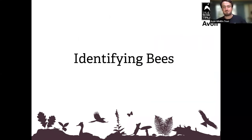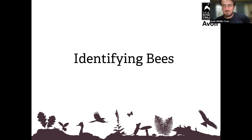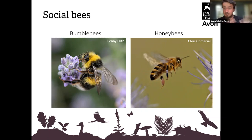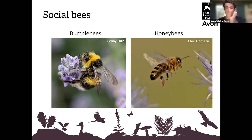Now let's crack on with identifying bees. As I said earlier, we divide bees into social bees and solitary bees — a nice clear categorization. The social bees largely contain the bumblebees, which everybody knows, and the classic honeybee.